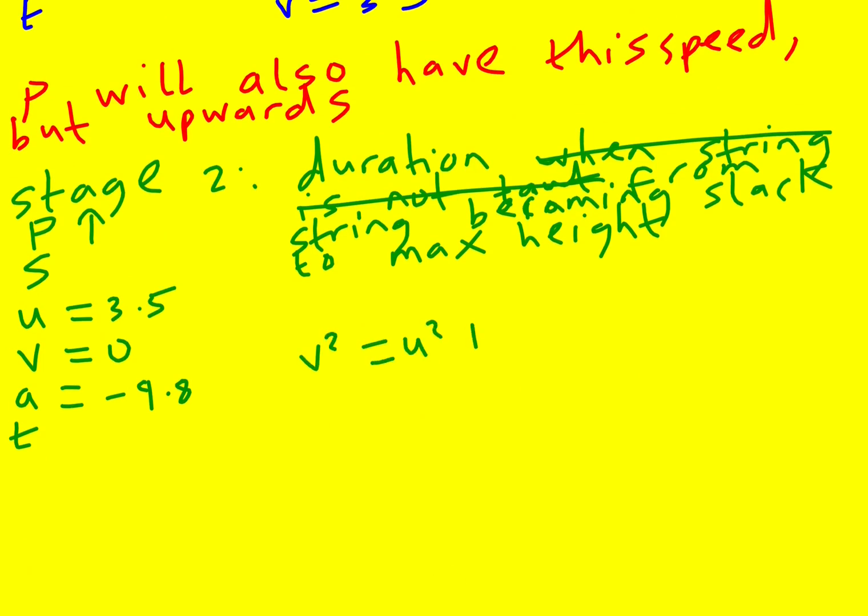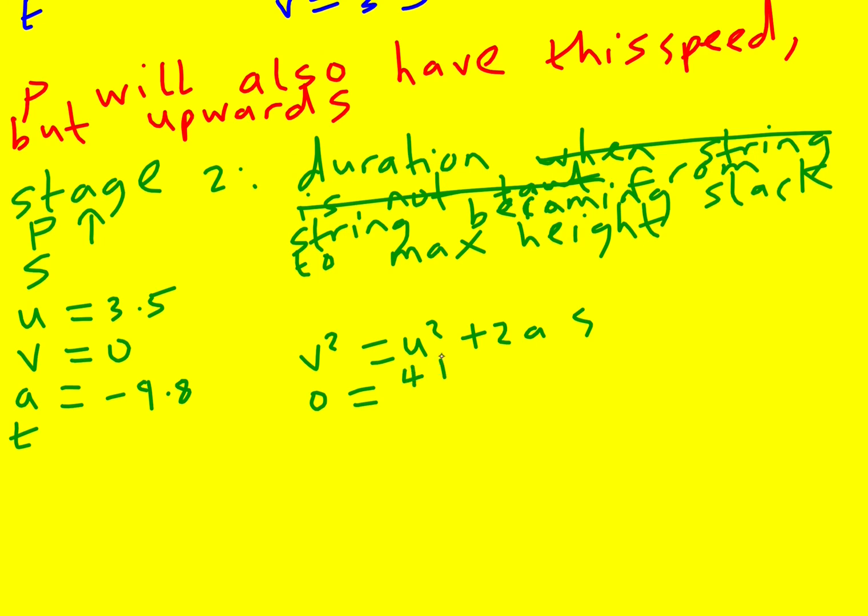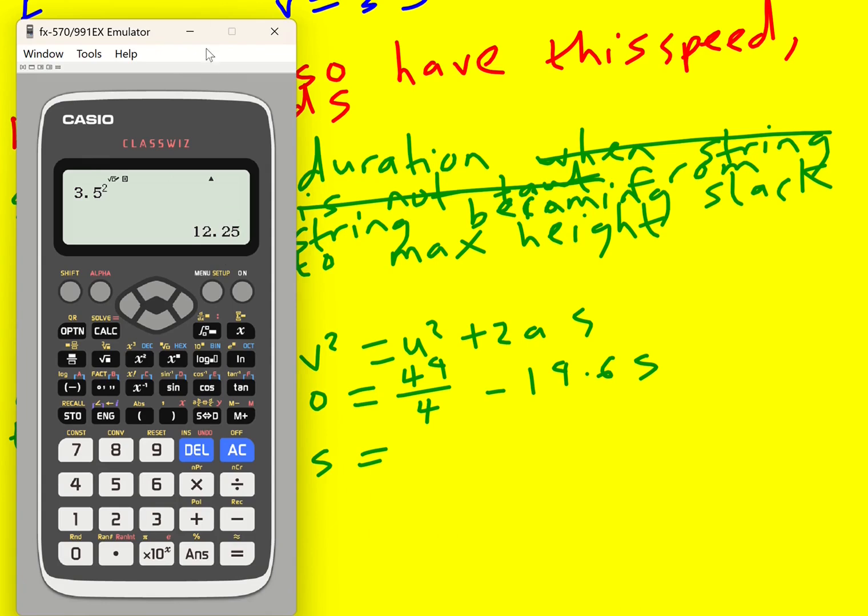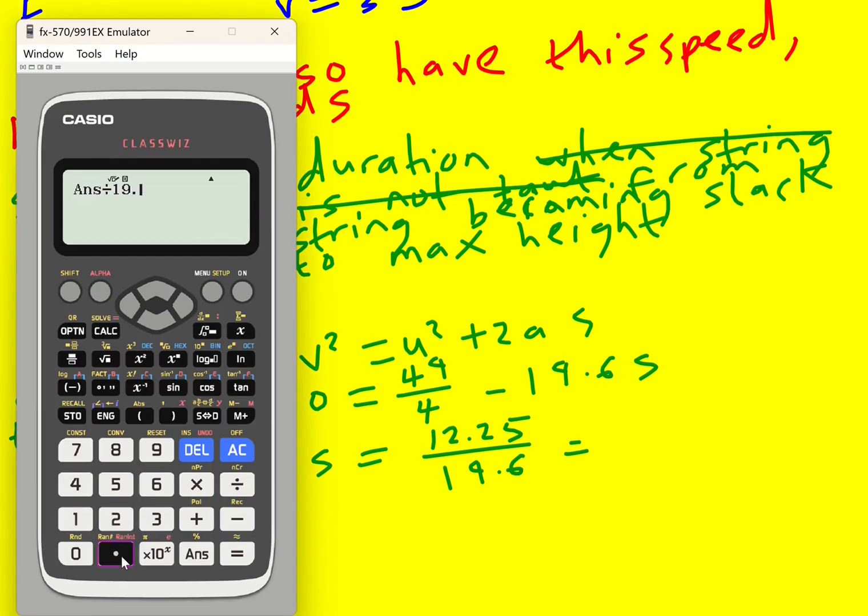So V squared is U squared plus 2AS. Zero is going to be 3.5 squared. Actually, that's that 49 over 4 again. Minus 2 times 9.8, that's actually 19.6. So S is going to be this 49 over 4, which is 12.25, divided by 19.6. Okay, if I rearrange this equation and solve. And we get 0.625.